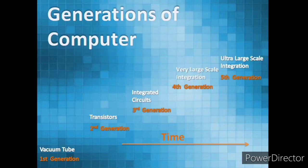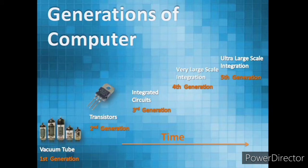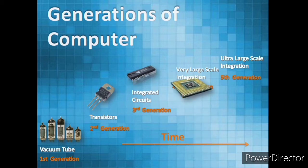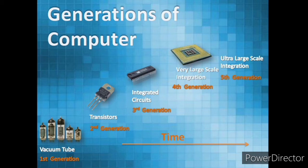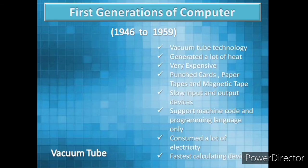Generations of computers: the first generation is based on vacuum tubes, second generation is based on transistors, third generation is based on integrated circuits, fourth generation is based on very large scale integration, and fifth generation is based on ultra large scale integration. Now, the first generation of computers.